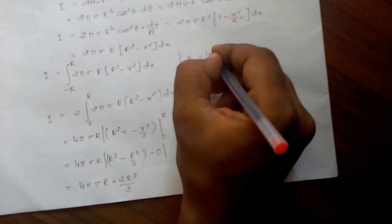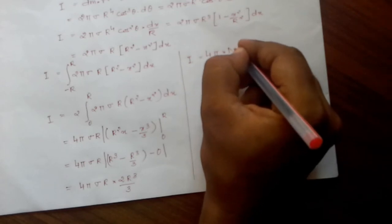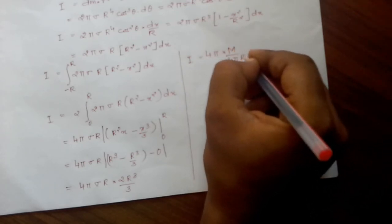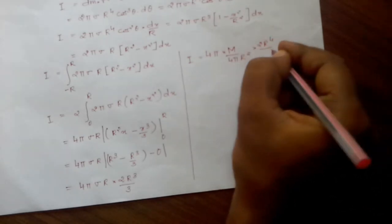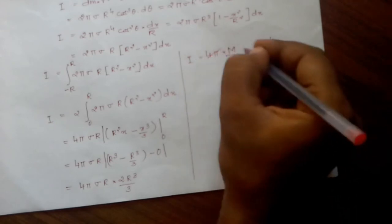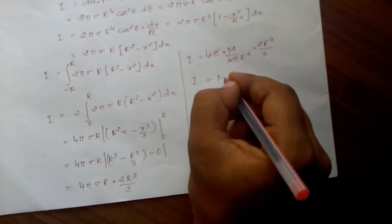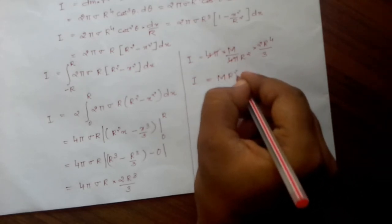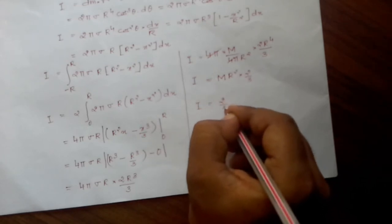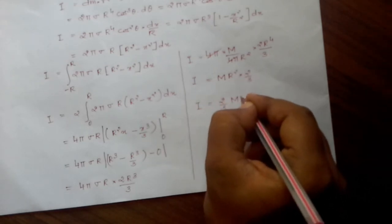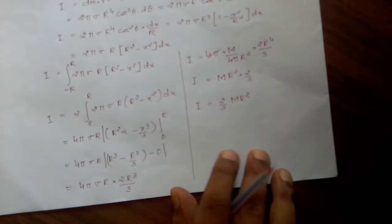Substituting σ = M/(4πr²), we get I = 4π × (M/4πr²) × r × (2r³/3). Cancelling 4π, we obtain I = M × r² × (2/3), or I = (2/3)MR².